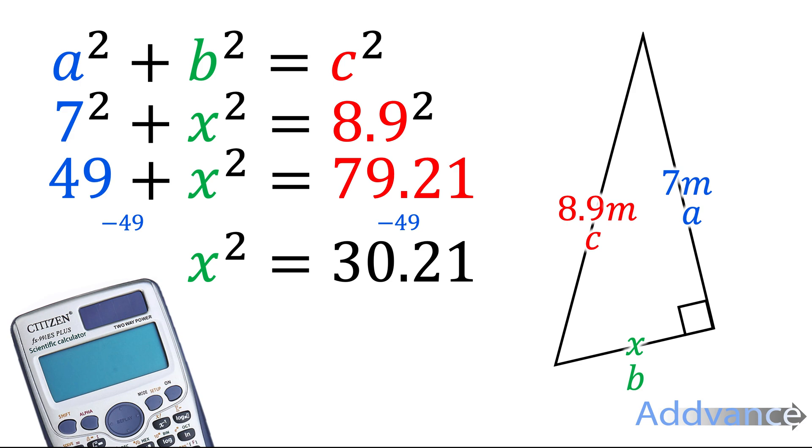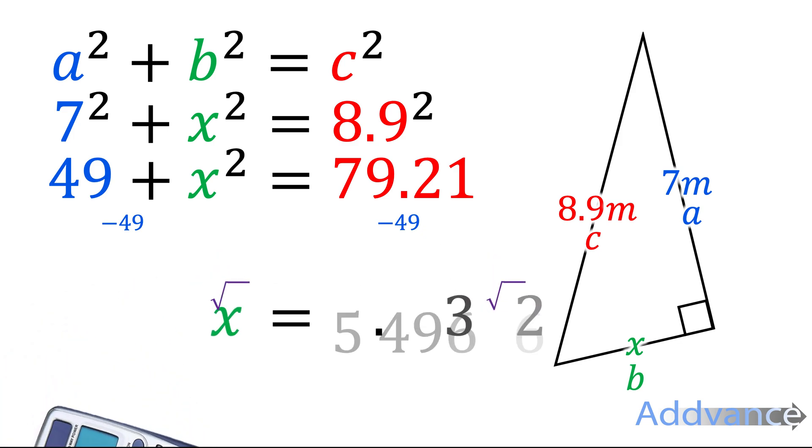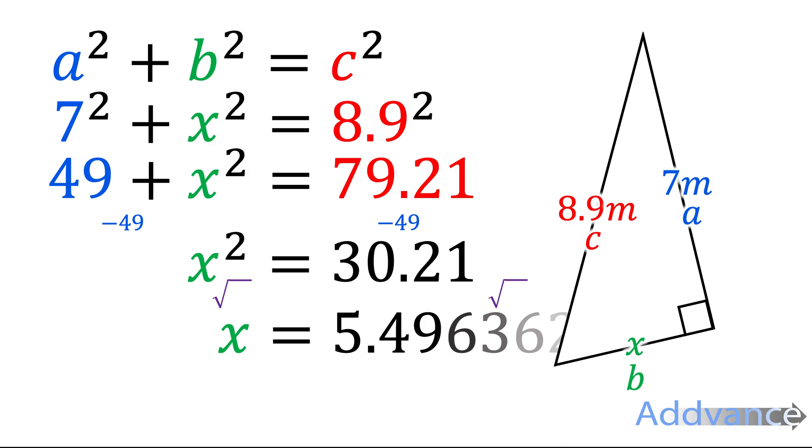Now we're going to square root both sides using our calculator. So let's go square root 30.21, and we get X is equal to 5.4963, etc. But we'll just round that to one decimal place, 5.5 metres. And we know that X is 5.5 metres.